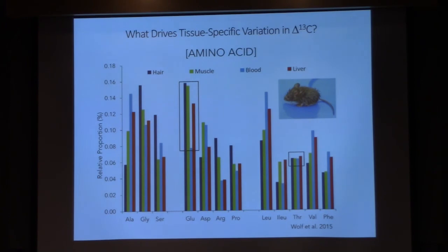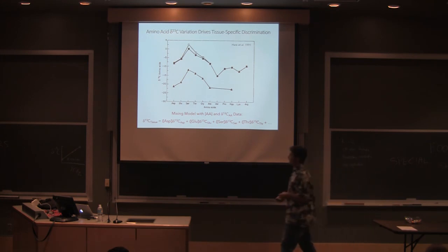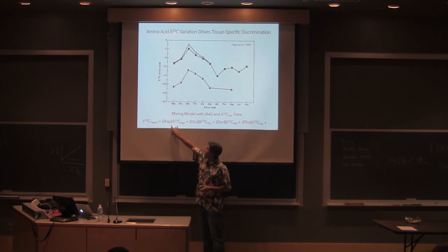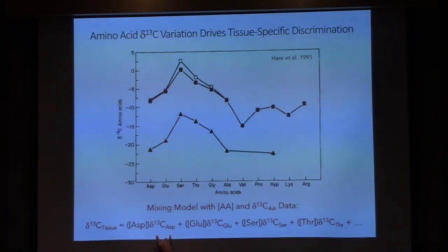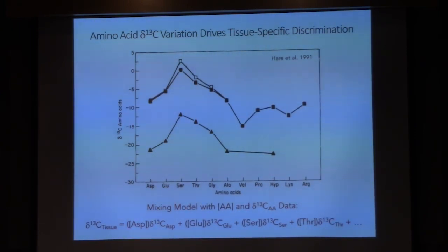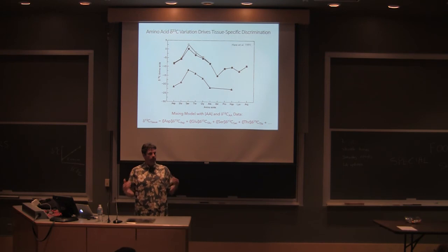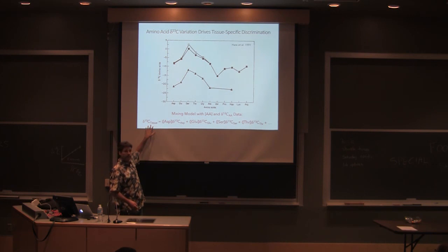But it's this difference in concentration coupled with the fact that amino acids can have wildly different carbon isotope values that leads to tissue specific discrimination. And you can figure that out by just using a mixing model where you take the concentration of a given amino acid times it by its carbon isotope value plus the concentration of another amino acid times it by its carbon isotope value for all the different amino acids in the tissue. And you'll find that different tissues have different isotope values. This being the carbon isotope value of the bulk tissue, the entire tissue. And that's what leads to tissue specific discrimination.